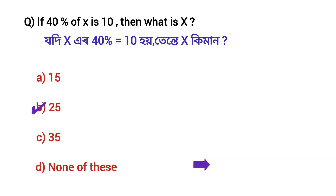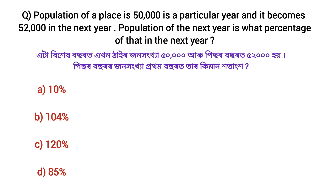The population of a place is 50,000 in a particular year, and it becomes 52,000 in the next year. The population of the next year is what percentage of that in the previous year? Options: 104%, 120%, 85%.